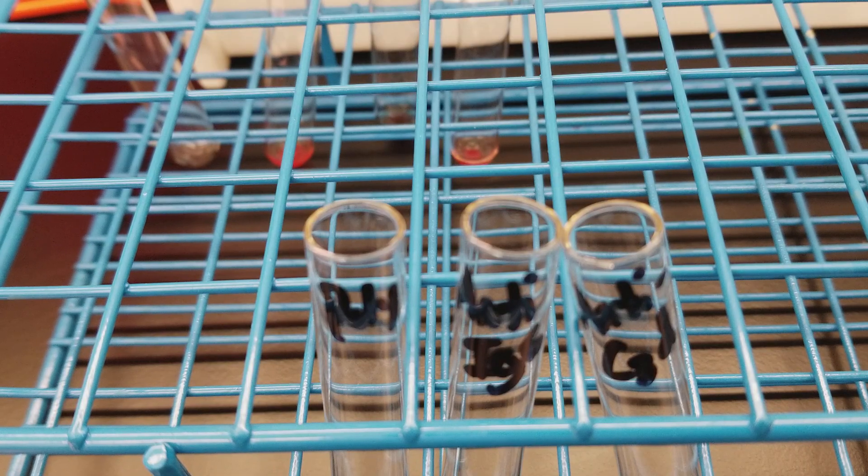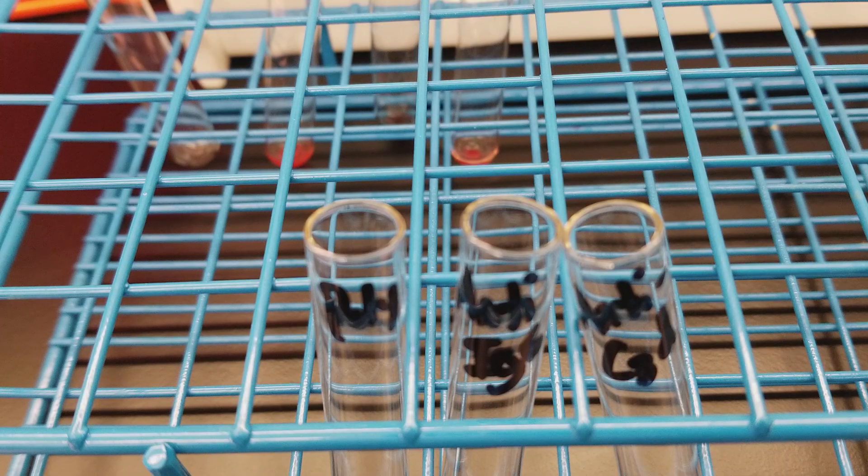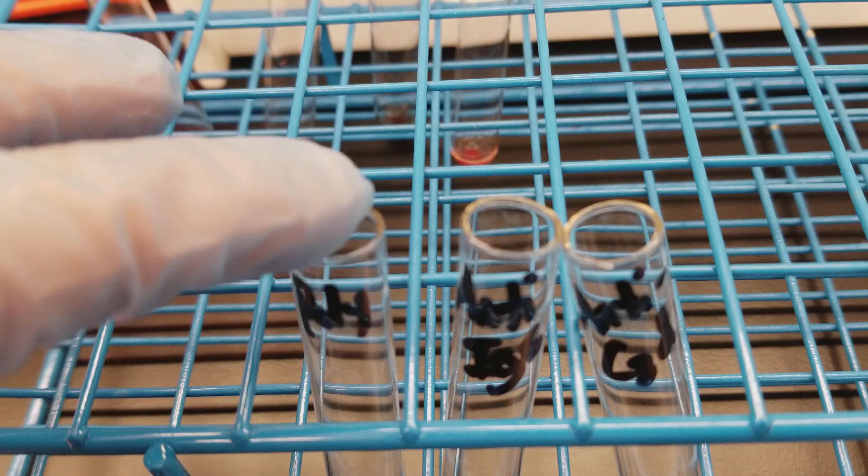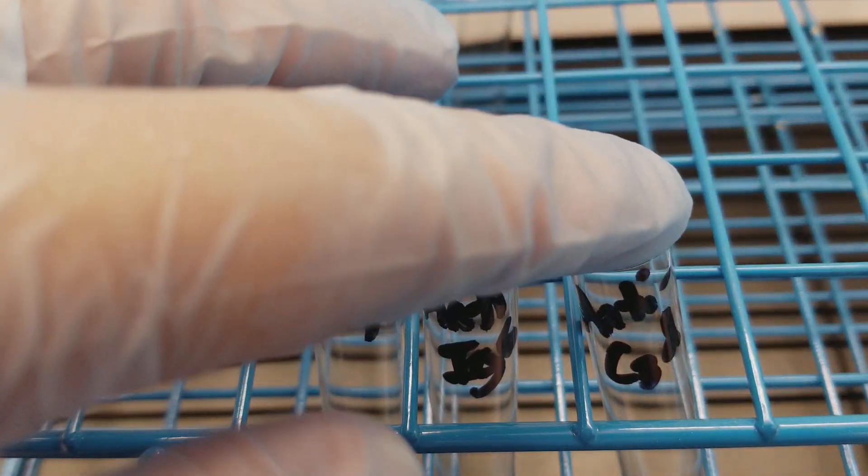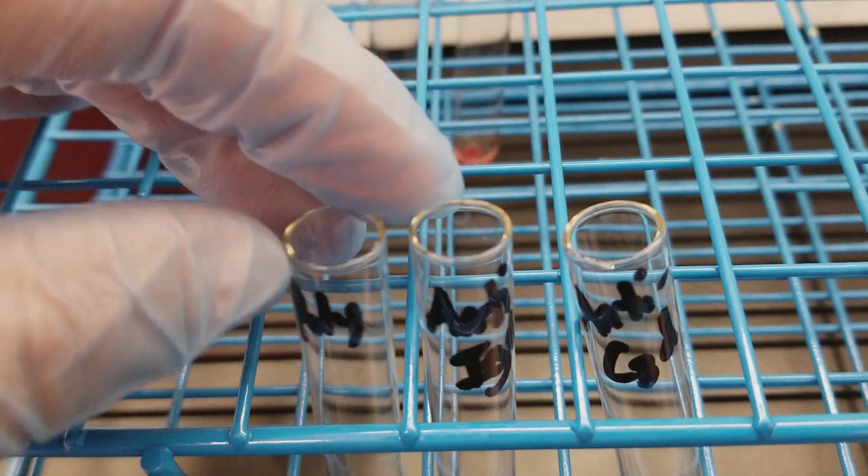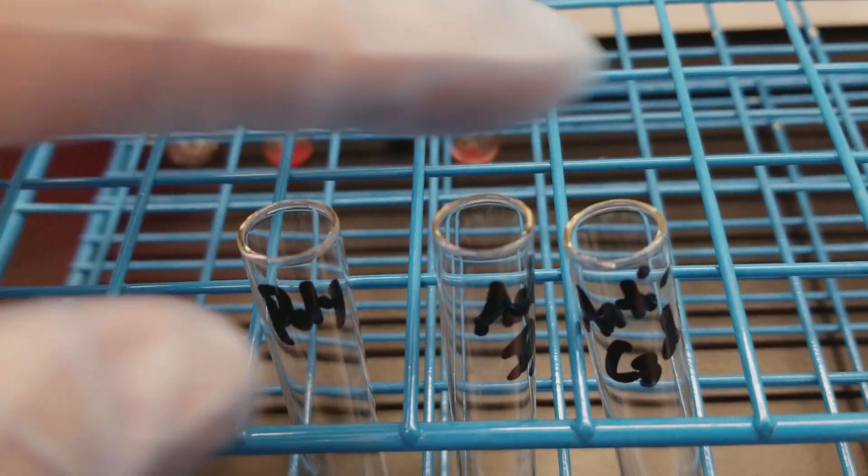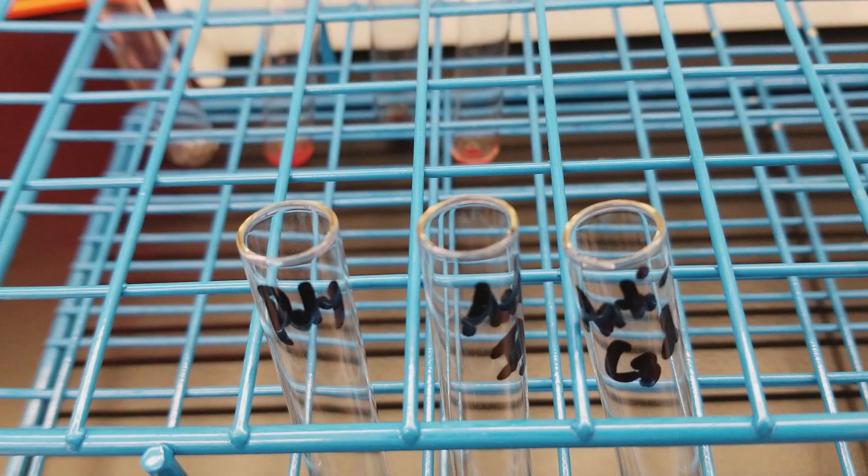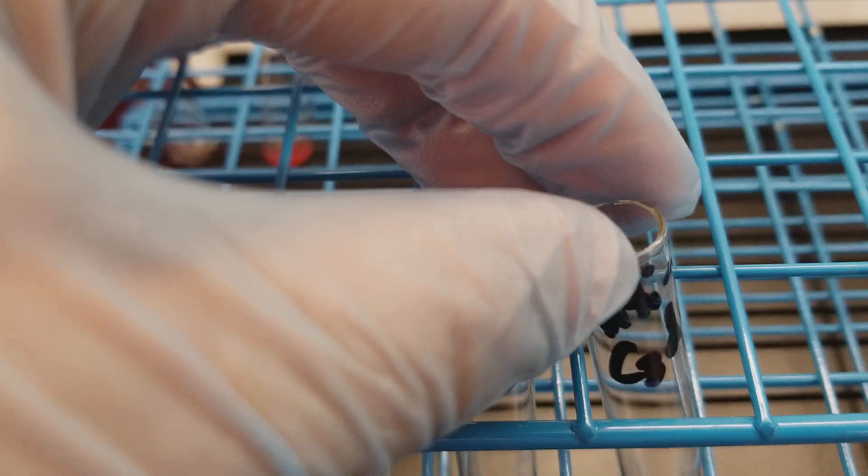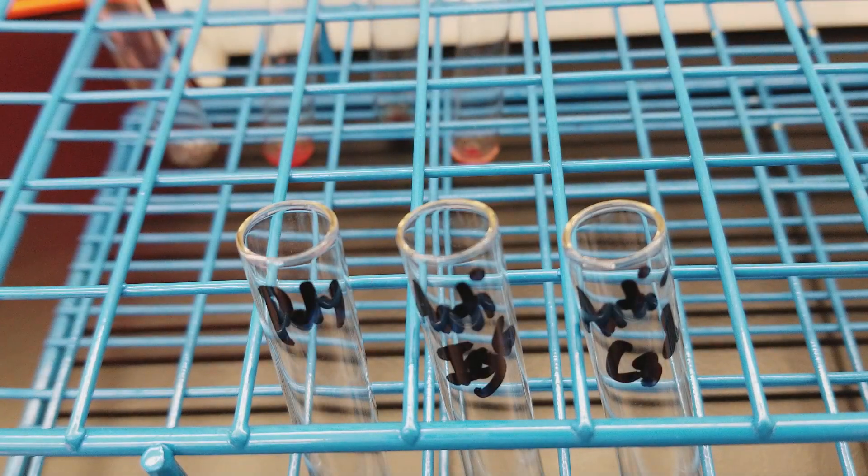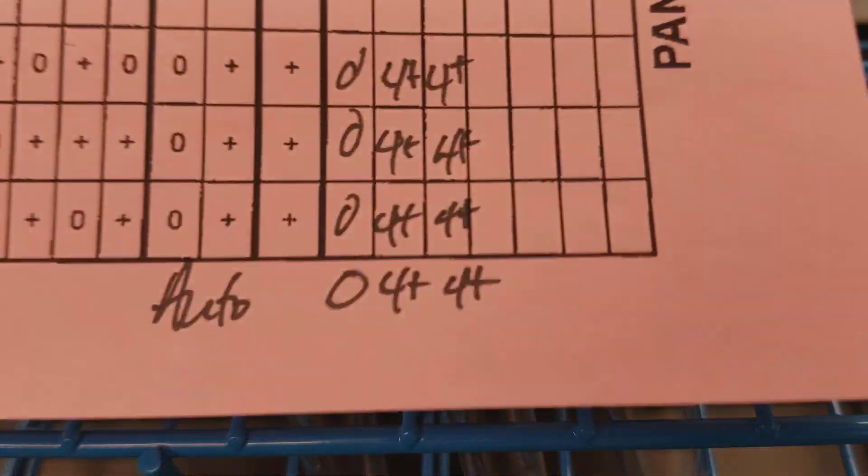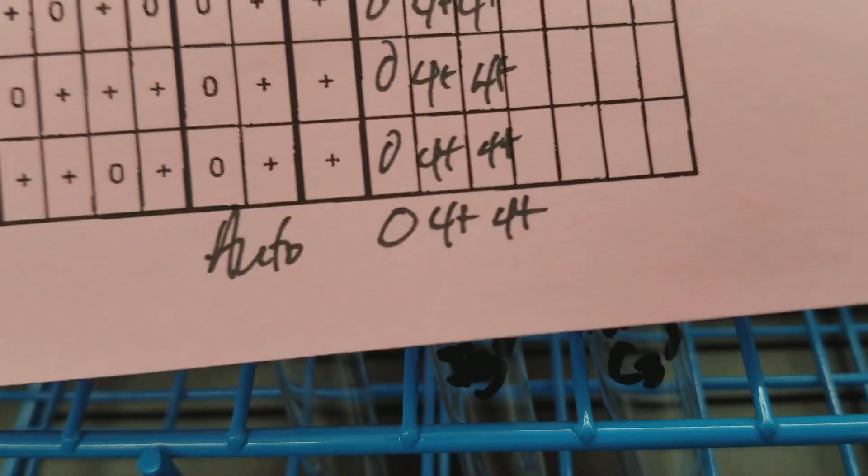I have my anti-IgG and anti-C3D. If the poly is positive, then one of these two should be positive as well, which would indicate why the poly was positive, because the poly has both of these in there. If this one is positive, then we need to know why those red cells in the autocontrol were sensitized and by what.